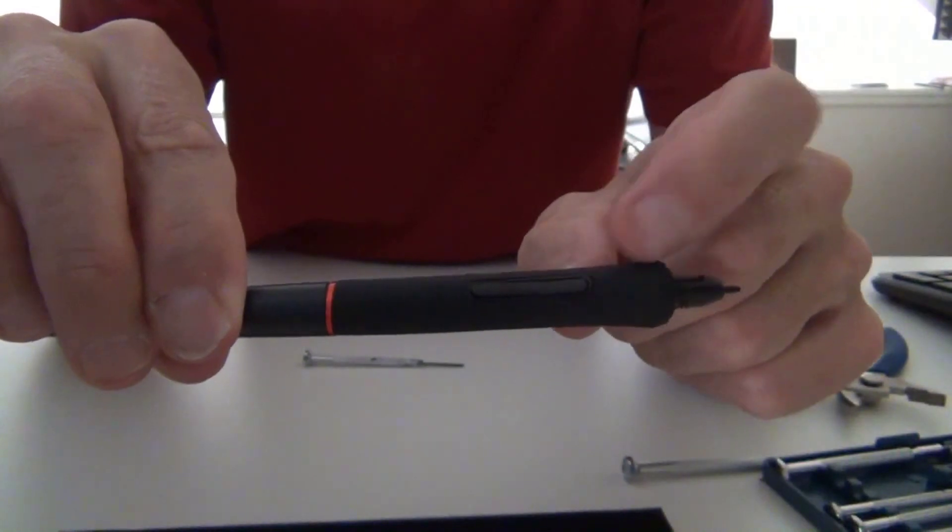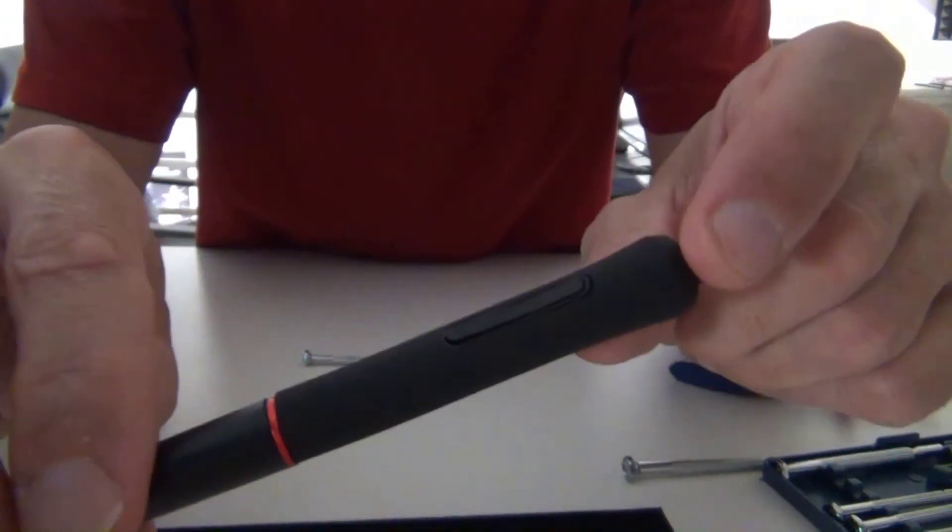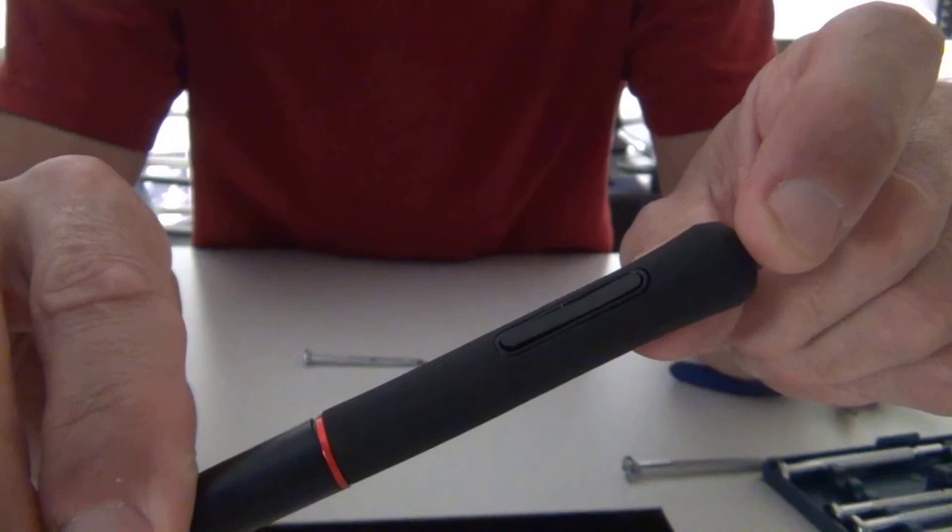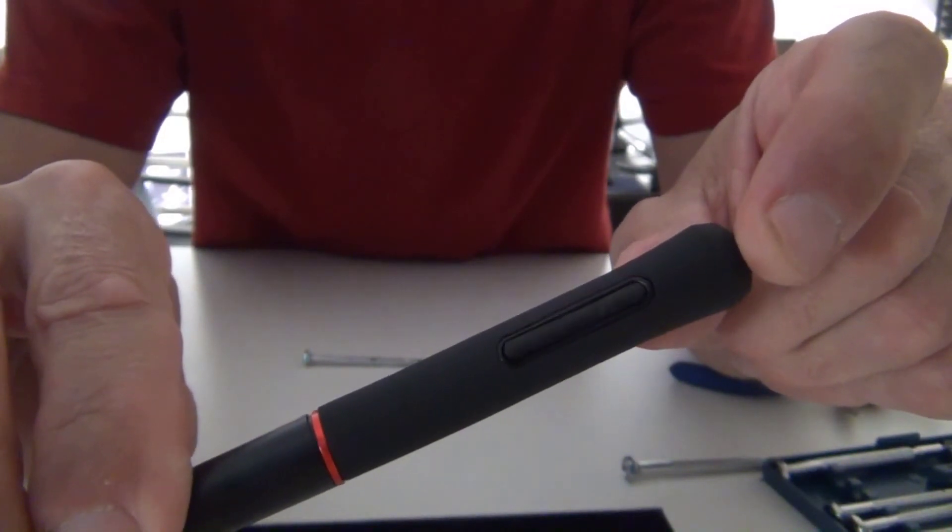And there's a faint line on the button indicating the front end. I don't know if you can see that, but there's a very faint line on the button that I think indicates the front end.